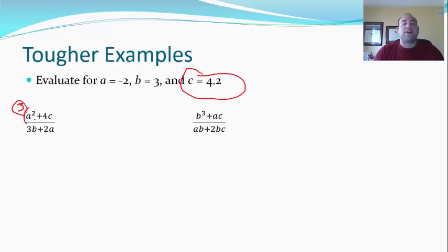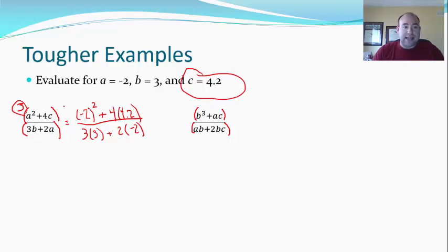Each of the numerators and denominators are actually containing parentheses. So when we do our order of operations, we're actually going to do these separately of each other and then divide the one top number we get by the one bottom number we get. So here's what I mean. Let's plug in for number 3. All our a's to be negative 2, all our b's to be 3, and all our c's to be 4.2. There's those parentheses again because I'm dealing with a negative number. 4.2 for c, b is 3, and a is negative 2.